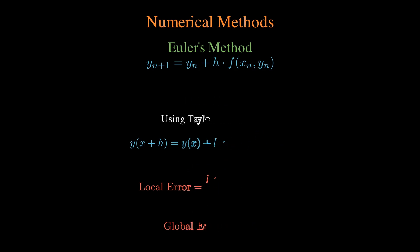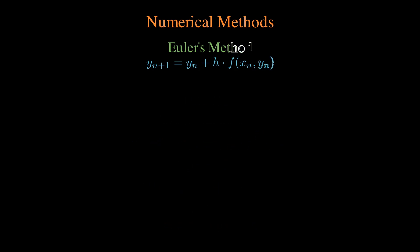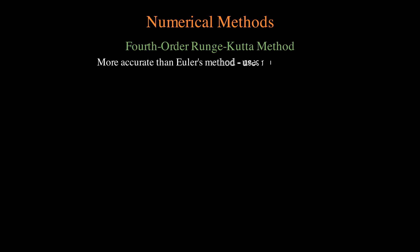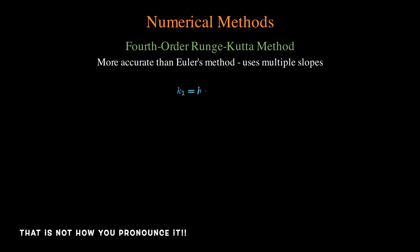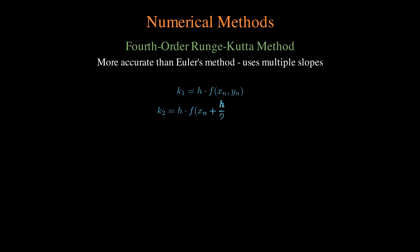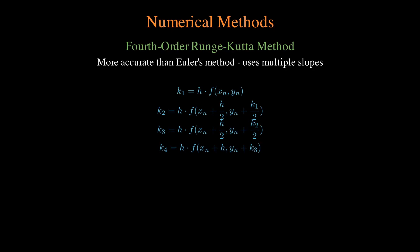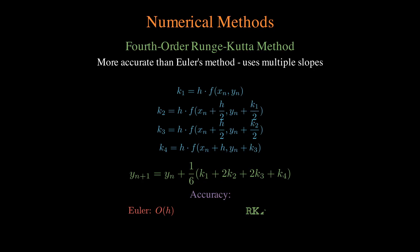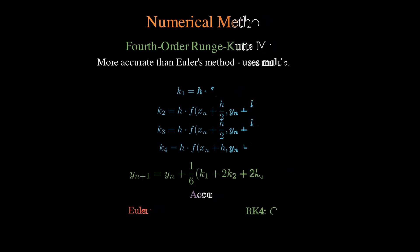We can do even better with the Runge-Kutta method. There are many variations; the fourth-order version computes four different intermediate variables and uses those to calculate the next step. Using this method, we can show the accuracy is much better — if h is 1/10, then h to the fourth is 1/10,000.